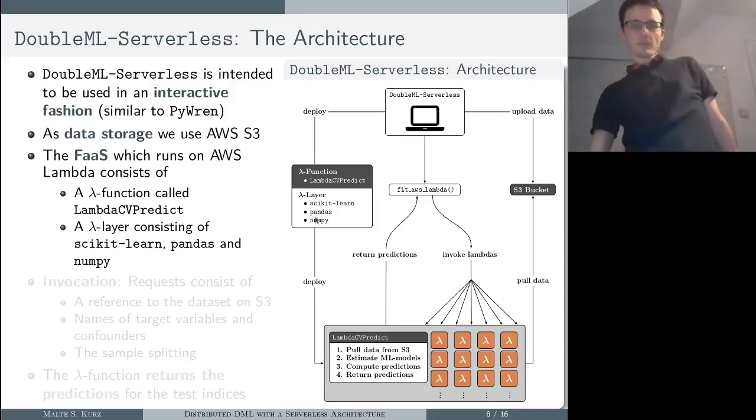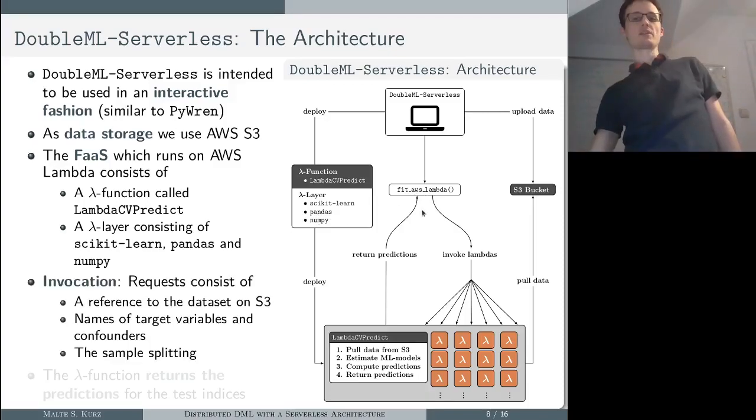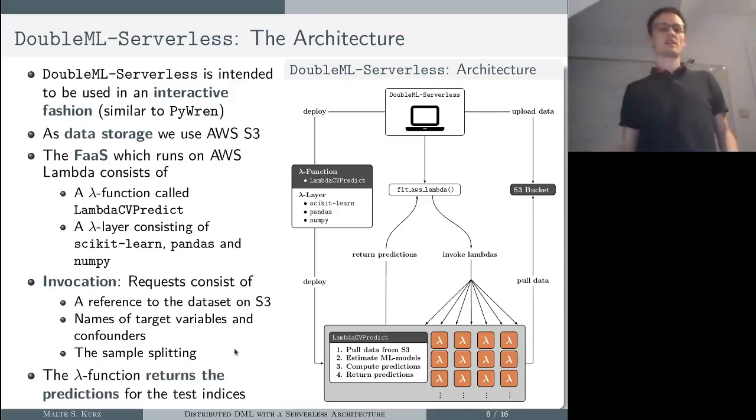At invocation, what is happening if I call fit AWS Lambda? Fitting the double machine learning model on Lambda, basically in each request a reference to the dataset on S3 is sent to AWS Lambda, and also the names of the target variables—what is my y, what is my d, what is my x—and the sample splitting needs to be transferred because the sample splitting needs to be aligned between the different invocations. Then the Lambda functions return the predictions, which are then plugged into this Neyman orthogonal score function, which then can be solved for our theta, our parameter of interest.